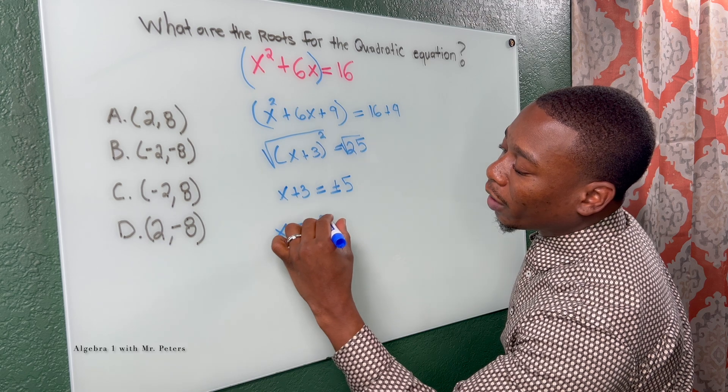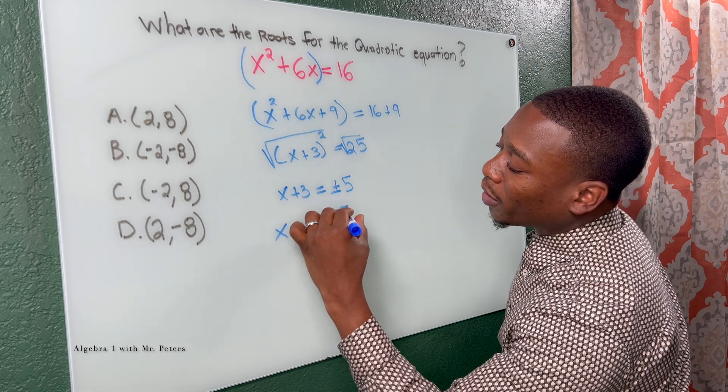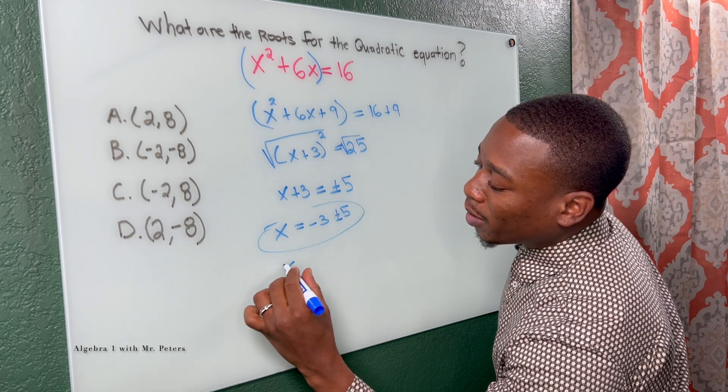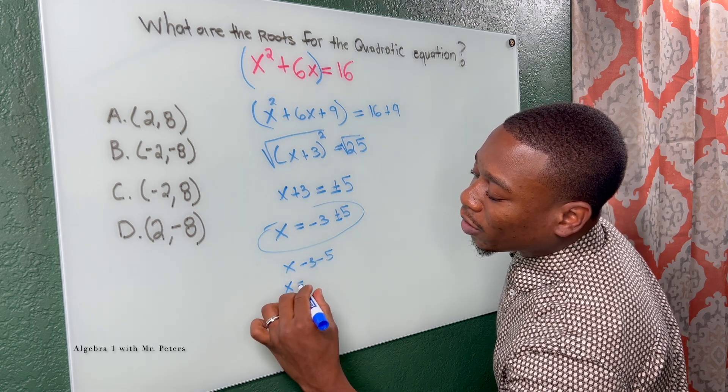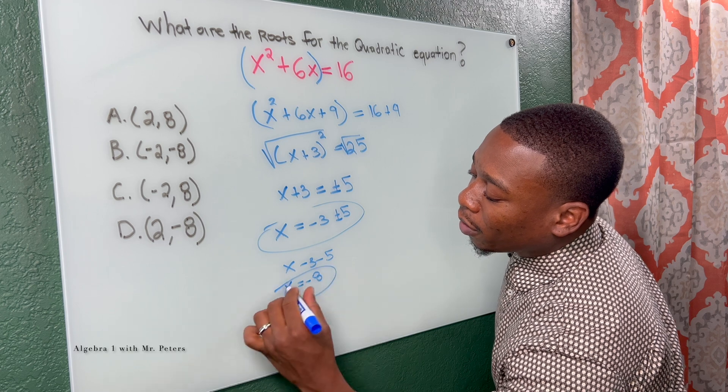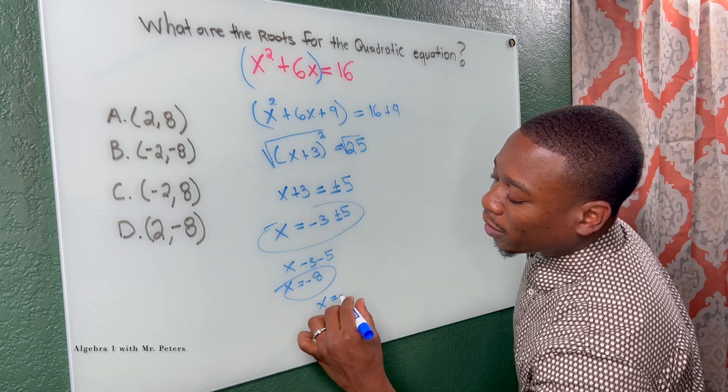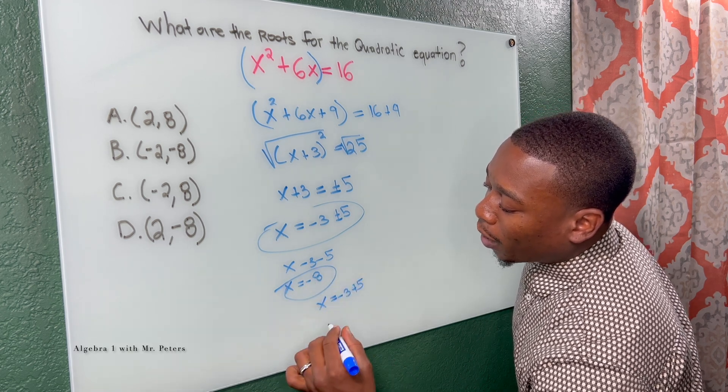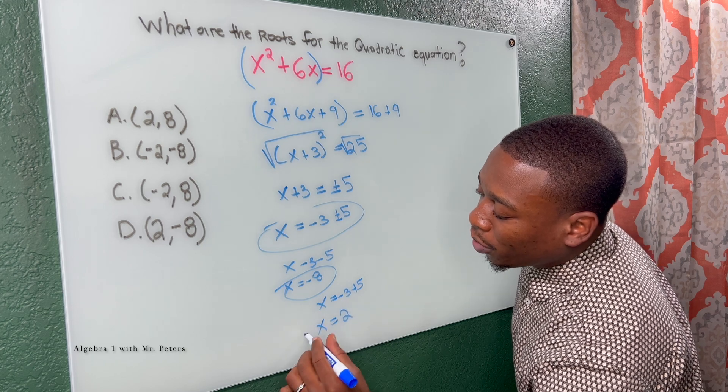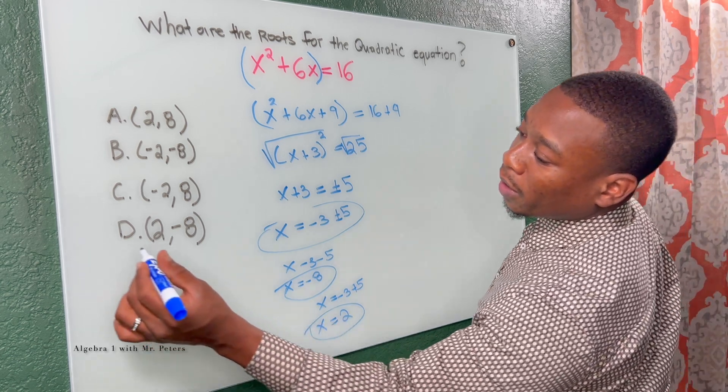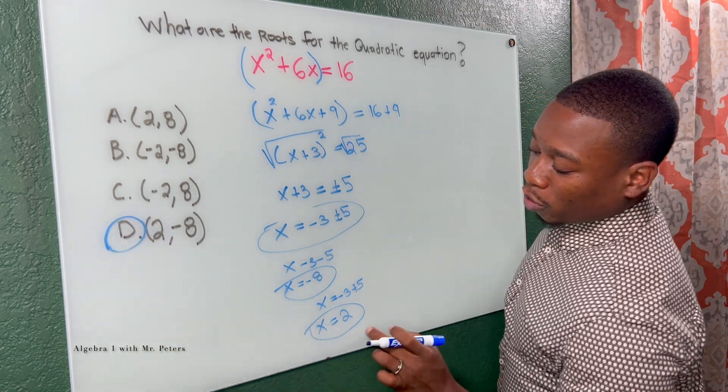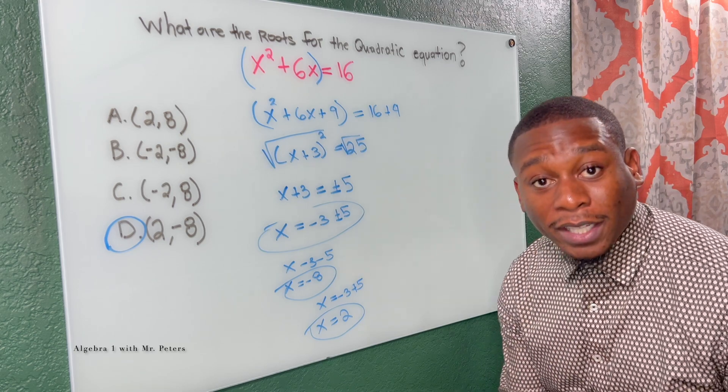So now x is equal to negative three plus or minus five. So when we simplify by splitting this, we're going to get x is equal to negative eight and we're going to get x is equal to positive two. So when we look at our answer choice, it's going to be D because two is positive and then our eight is negative.